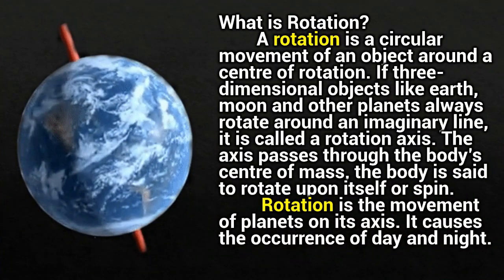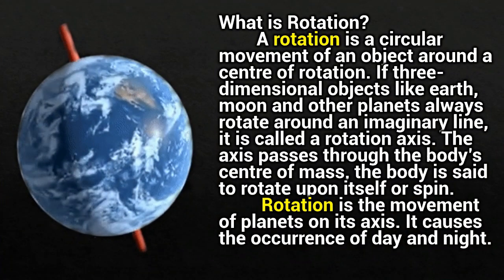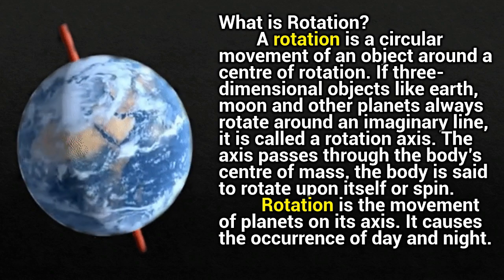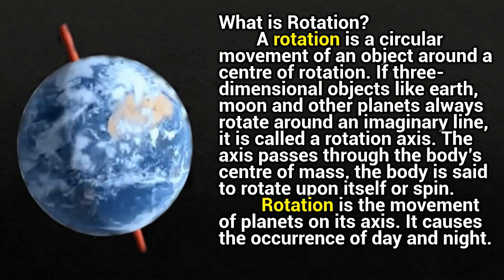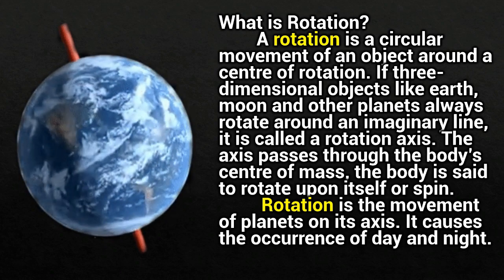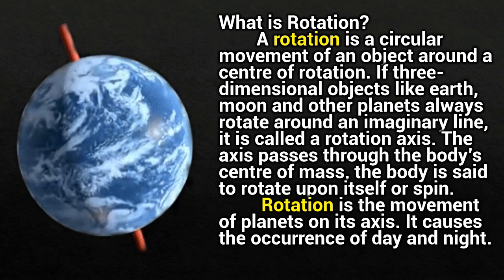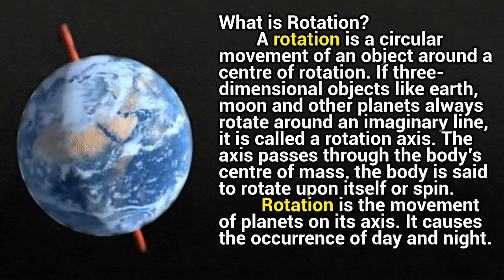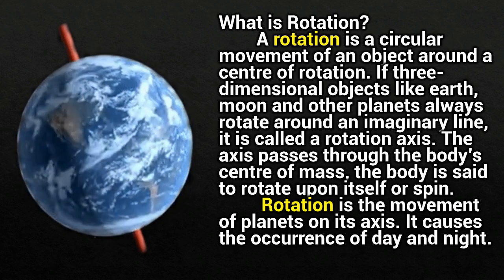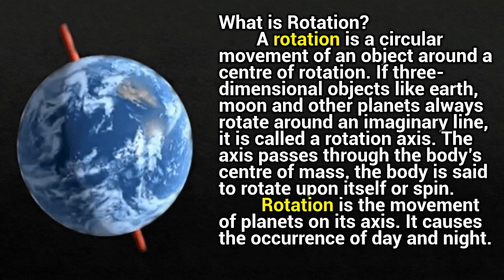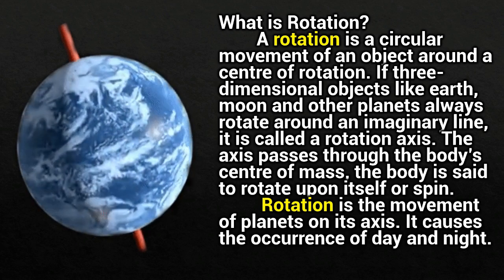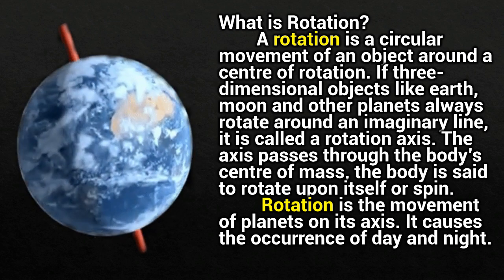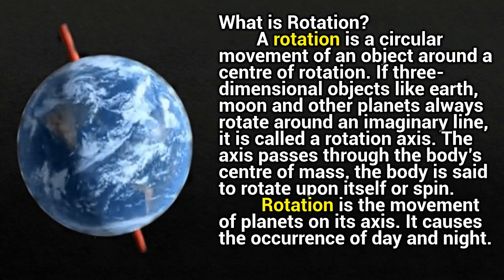A rotation is a circular movement of an object around a center of rotation. If three-dimensional objects like Earth, Moon, and other planets always rotate around an imaginary line, it is called a rotation axis. The axis passes through the body's center of mass, and the body is said to rotate upon itself or spin.